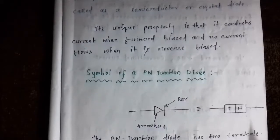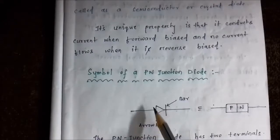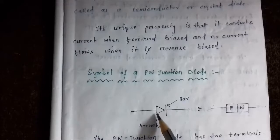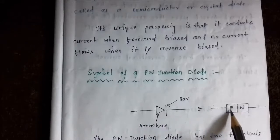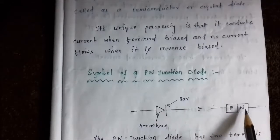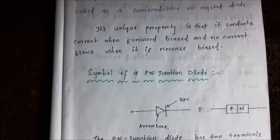Let us first see the symbol of a PN junction diode. It consists of an arrowhead followed by a vertical bar. This arrowhead represents the P-type part of the PN junction, while the vertical bar signifies the N-type end of the PN junction. The PN junction diode has two terminals: the P-type terminal or arrowhead terminal, and the N-type or vertical bar terminal.